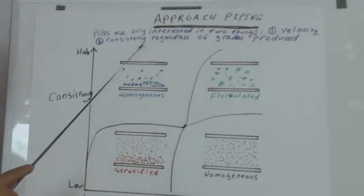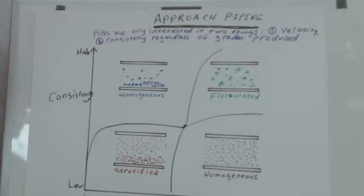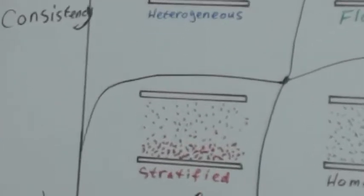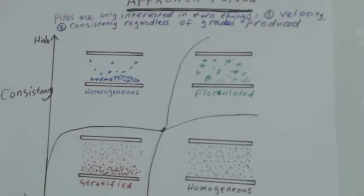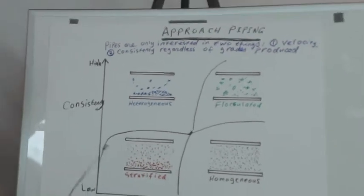The velocity and the consistency regardless of the grades produced. You can produce tissue or liner board, it really doesn't matter. These pipes don't know what you are doing. They are interested in these two things: velocity and consistency.